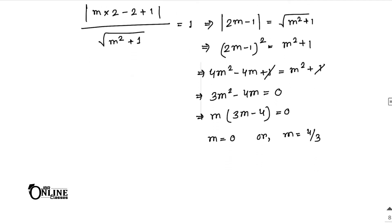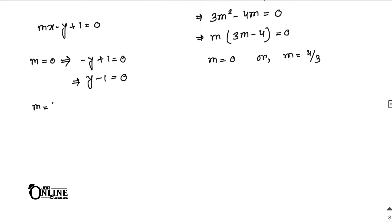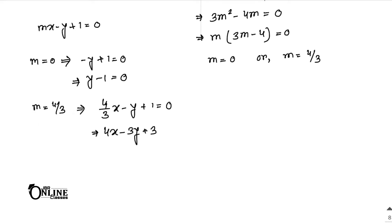The given equation is mx minus y plus 1 = 0. For m = 0: the equation becomes minus y plus 1 = 0, or y minus 1 = 0 — that is the first answer. For m = 4/3: substituting gives (4/3)x minus y plus 1 = 0, so multiplying through: 4x minus 3y plus 3 = 0 — that is the second answer.